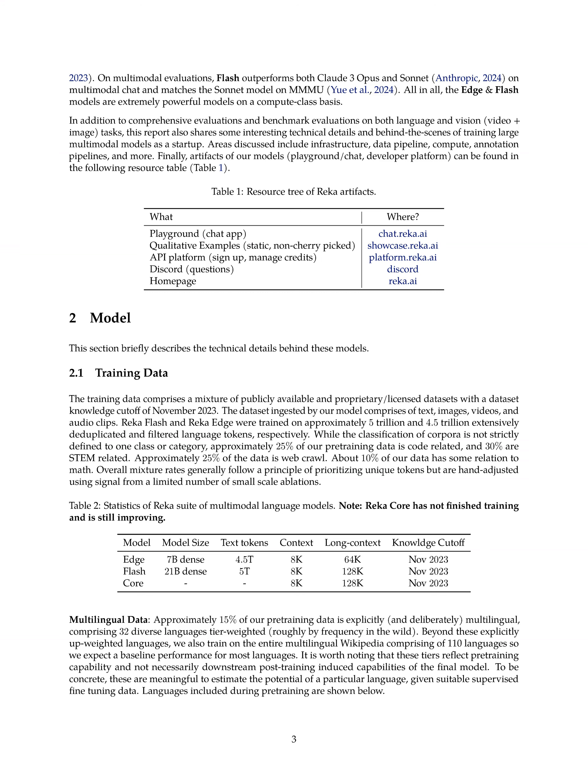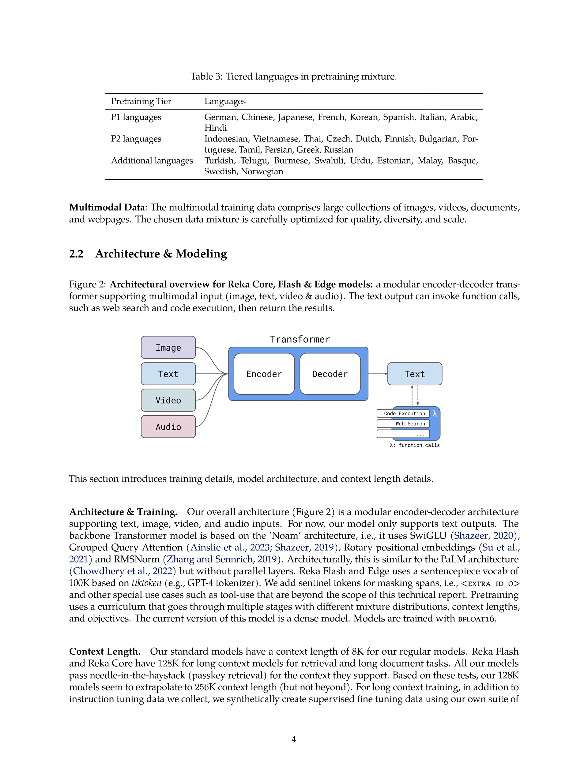The dataset includes a variety of content, with approximately 25% being code-related, 30% STEM-related, 25% web crawl data, and 10% math-related. Additionally, about 15% of the pre-training data is deliberately multilingual, with 32 diverse languages weighted by frequency. The models are trained using a curriculum that progresses through multiple stages with different mixture distributions, context lengths, and objectives.